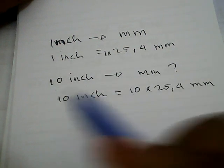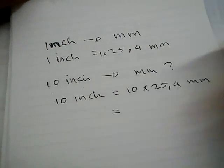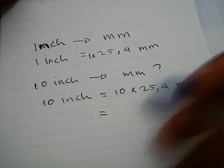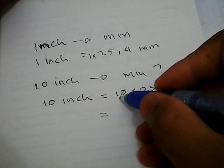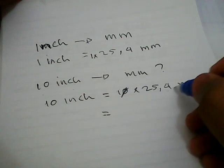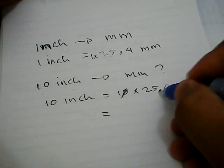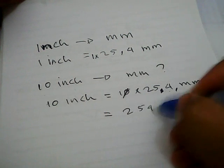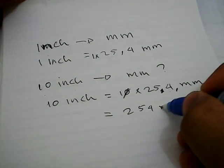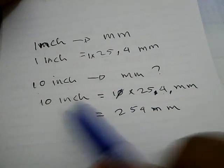We have 10 multiplied by 25.4. The result is 254 millimeters. That's it - 10 inches converted into millimeters equals 254 millimeters.